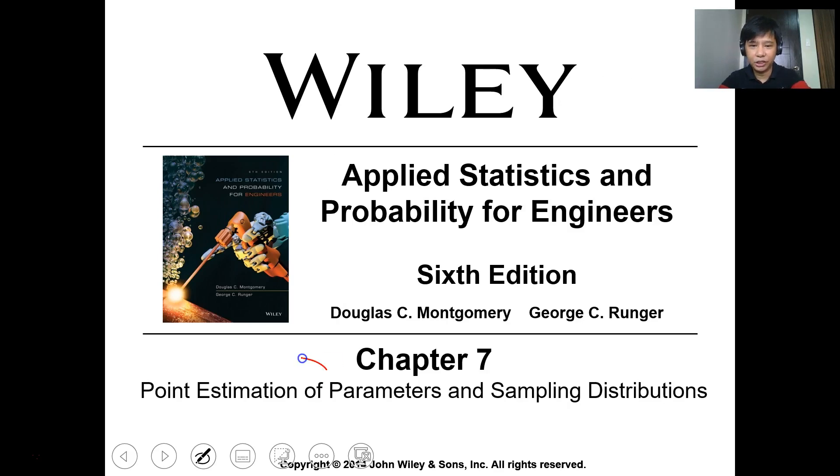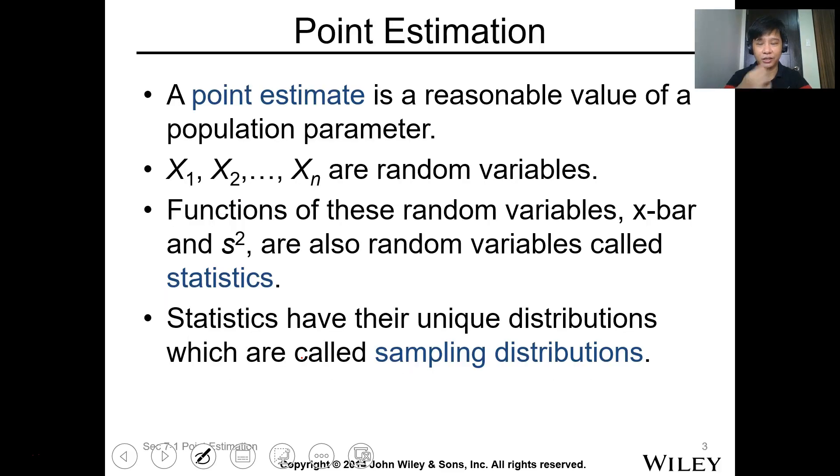So this is chapter 6 of our textbook, Applied Statistics and Probability for Engineers, the sixth edition by Montgomery and Runger. Okay, so let's start.